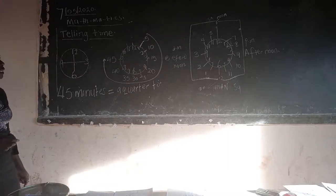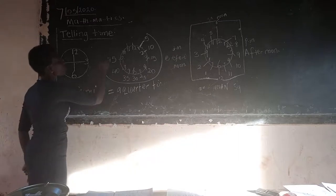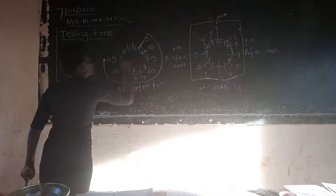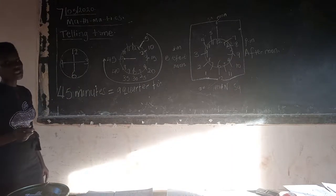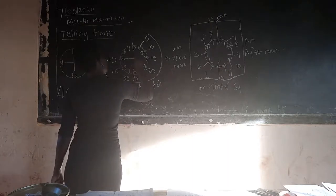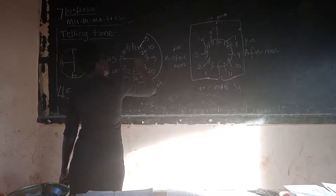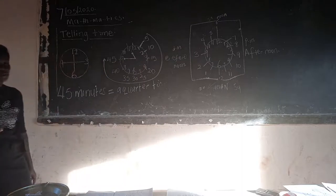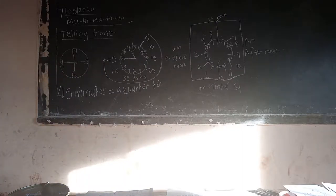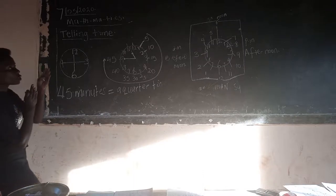Are we there? Now I want someone to help me — where shall we put the long hand? So the long hand shall hold at forty-five minutes. This is our long hand. Are we there? Okay, now can we take the time? What is the time now? It is a quarter to twelve, because it's going towards twelve.